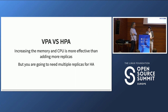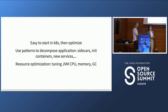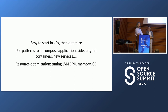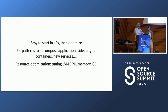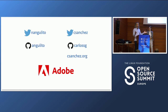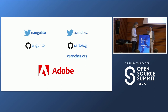Three things to take away: Kubernetes is easy to start with — lift and shift — then optimize over time. Use patterns to decompose the application: sidecar containers, init containers, then new services. You can keep doing this as you bring a monolith into Kubernetes. It's also very important to optimize resources over time. On Java, tune the JVM CPU, memory, and garbage collector. This applies to other processes too. Save money and make your bosses happy. Thank you very much for having us.